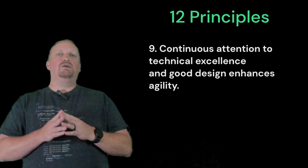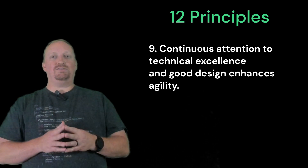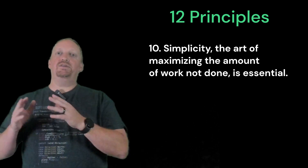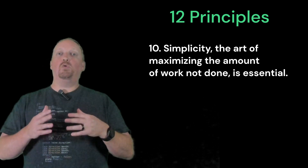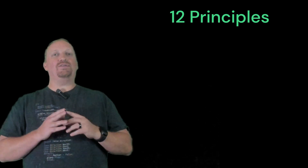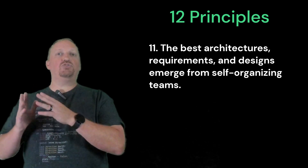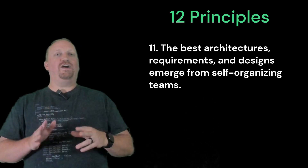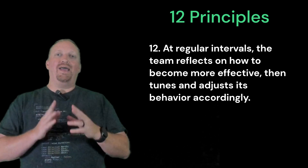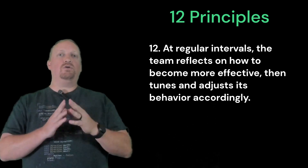Number nine: continuous attention to technical excellence and good design enhances agility. Number ten: simplicity — the art of maximizing the amount of work not done is essential. Number eleven: the best architectures, requirements, and designs emerge from self-organizing teams. And finally, number twelve: at regular intervals the team reflects on how to become more effective, then tunes and adjusts its behavior accordingly.